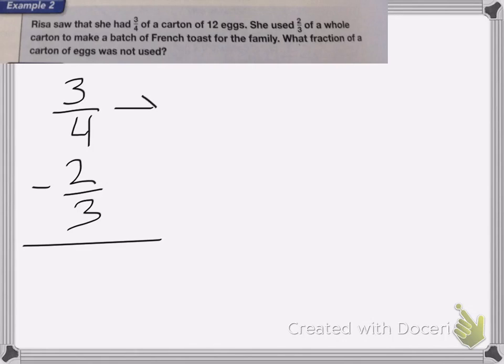So again, I cannot change this 3 into a 4 no matter how hard I try, so I need to change both denominators. So I have to think, what number do both of these denominators go into? And the first one I can think of is 12.